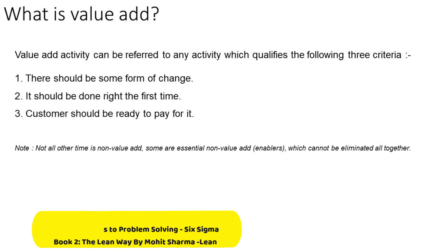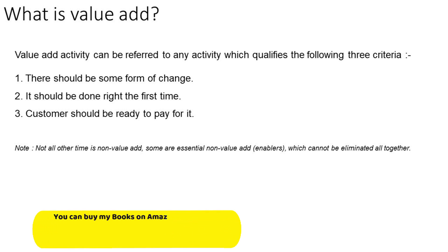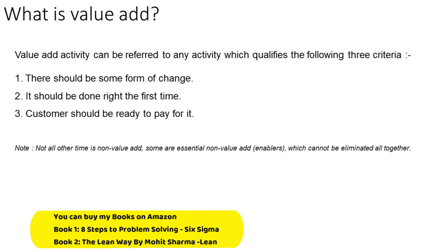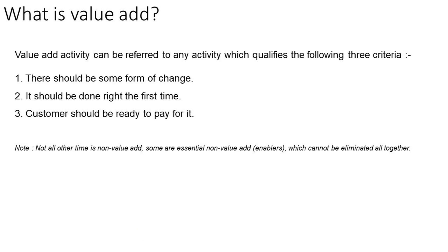In most transaction-based processes, the quality check is something the customer is not ready to pay for — they want transactions done correctly the first time, so they will not pay for your quality team. This makes it a non-value-added activity. However, not all non-value-added activities are unnecessary. Some are essential non-value-added activities called enablers. For example, a QC check is an enabler — it cannot be eliminated altogether but can be reduced. Enablers are intentionally retained to make the process smoother and faster.